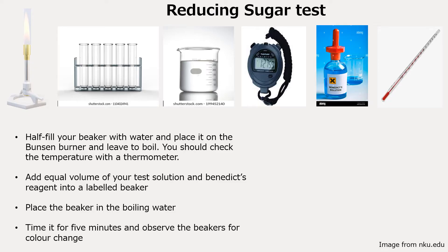You'll be given your test solution and you can take it and add one ml. So let's say that is one ml of your test solution, and on top of that you add one ml of your Benedict solution. You take the entire test tube and you put it into the boiling beaker of water, and you time it for five minutes and observe the beakers for color change.